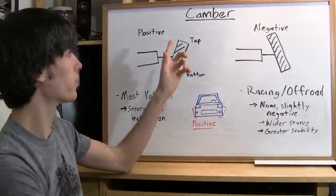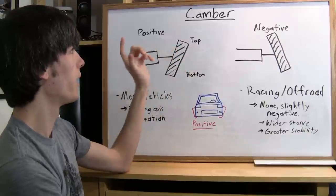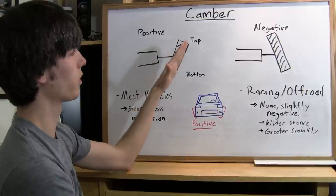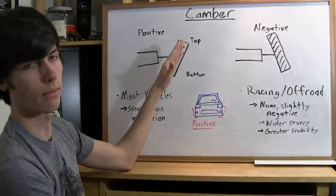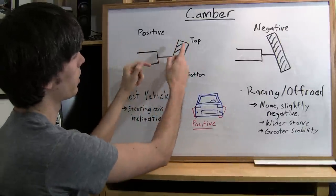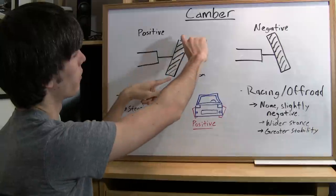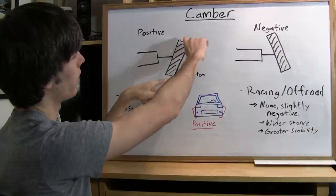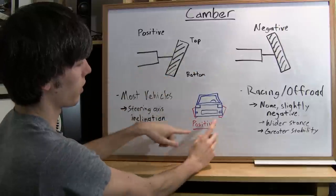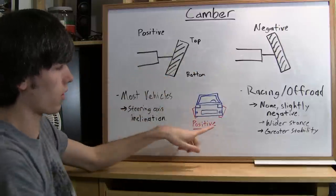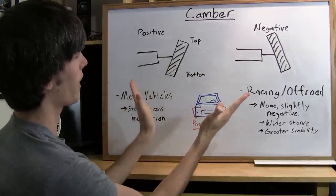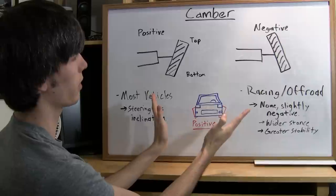First off is camber. Camber is the angle of the tire with respect to the vertical axis of the car. Positive camber is when the top of the tire is leaning outward and the bottom of the tire is inward. So if you're looking at a car straight on, you're going to see the tires bowing out — that will be positive camber.